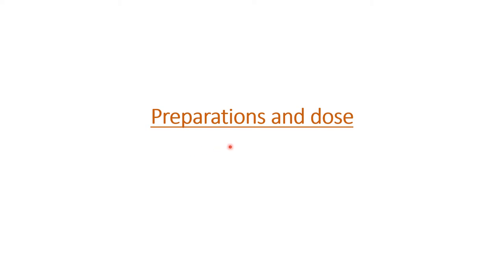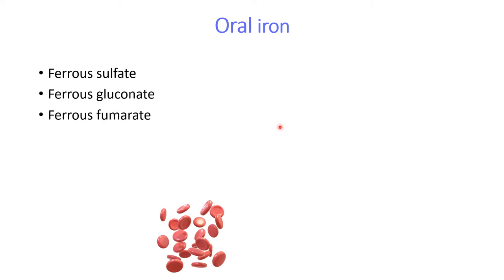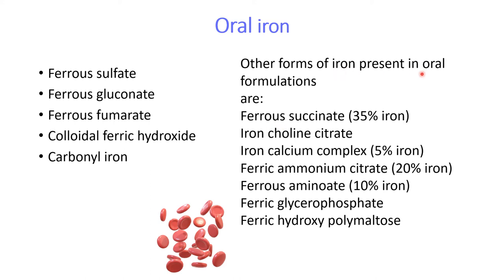Oral iron preparations include ferrous sulfate, ferrous gluconate, ferrous fumarate, colloidal ferric hydroxide, and carbonyl iron. Other forms present in oral formulations include iron choline citrate, iron calcium complex, ferric ammonium citrate, ferrous aspartate, ferric glycerophosphate, and ferric hydroxy polymaltose.